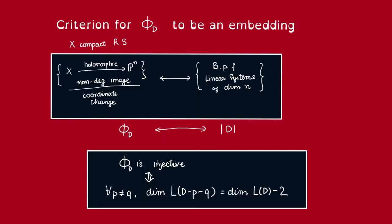So now we have the criterion for φ_D to be an embedding. So previously, we said that φ_D is injective for distinguishing P and Q, we have the following equation on dimension. Alright, now for φ_D to be an embedding, we just need to drop the condition that P and Q must be distinct. So this should be true for any P and Q. We must have this dimension equality.